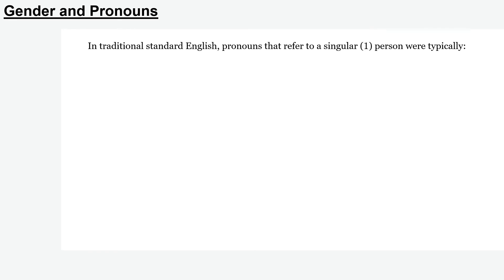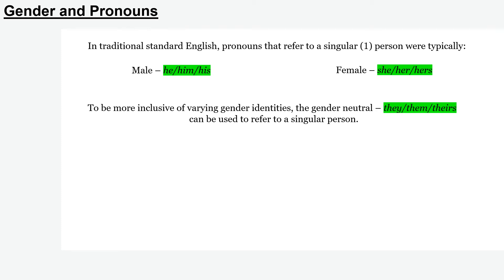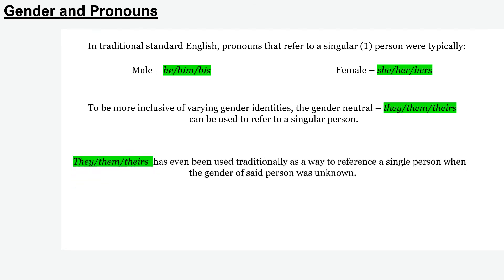While we're talking about gender and pronouns, let's take a moment on this. In traditional standard English, pronouns referring to a singular person were typically he, him, his for males, and she, her, hers for females. However, to be more inclusive of a variety of gender identities, we can also use the gender-neutral they, them, theirs to refer to a single person. They, them, theirs is usually used in standard English for multiple or plural, but it can be used in a singular sense — and in fact has been used as singular pronouns for quite a while, particularly when the gender of the person is unknown.